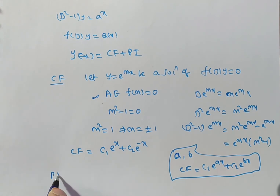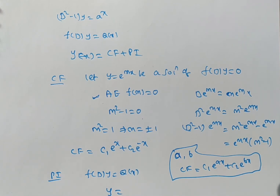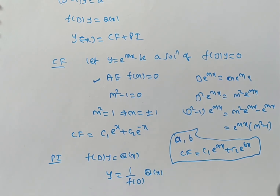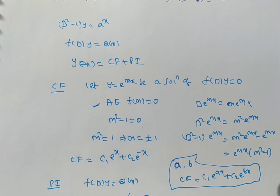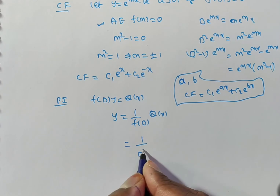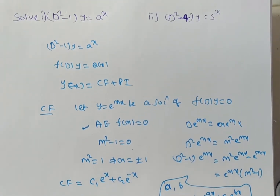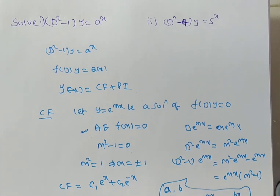Now we want the particular integral. For f(D)y = Q(x), the particular integral is (1/f(D))·Q(x). Here f(D) = D² - 1, so the particular integral is 1/(D² - 1) · aˣ, where Q(x) = aˣ.